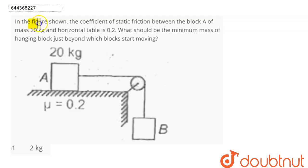Question is, in the figure shown, the coefficient of static friction between the block A of mass 20 kg and horizontal table is 0.2. This is mu value 0.2. What should be the minimum mass of the hanging block just beyond which the block starts moving?